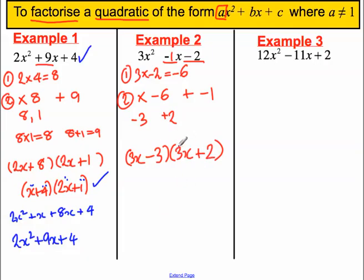Ask yourself, is there anything I can cancel in this bracket? No, nothing other than 1 goes into 3x and 2. Here, 3 goes into 3x and 3.